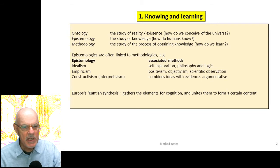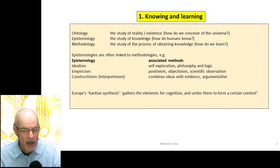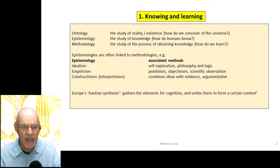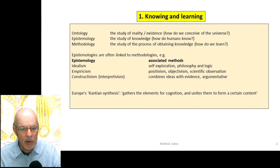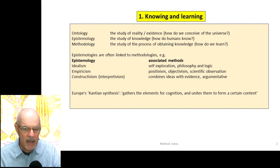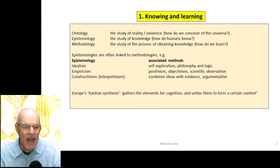In epistemologies, we have idealism, which is associated with self-exploration, philosophy and logic. Empiricism in the Western tradition had to do with the early days of scientific experiments and is often associated with methodological approaches such as positivism, objectivism, and scientific observation. Then in the social sciences, we have constructivism or interpretivism — that is to say, combining ideas with evidence. It's an argumentative form which is very common in social sciences.